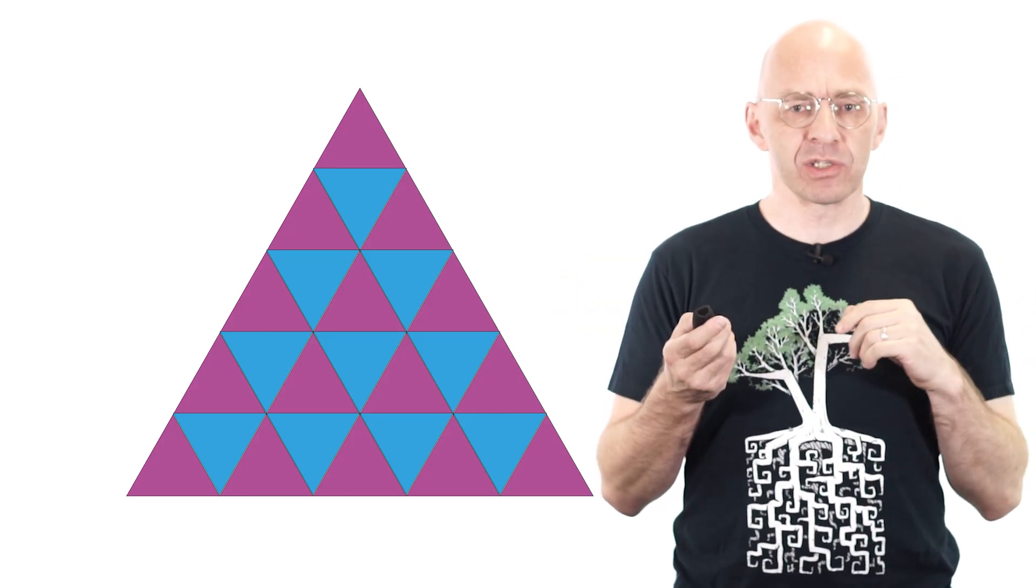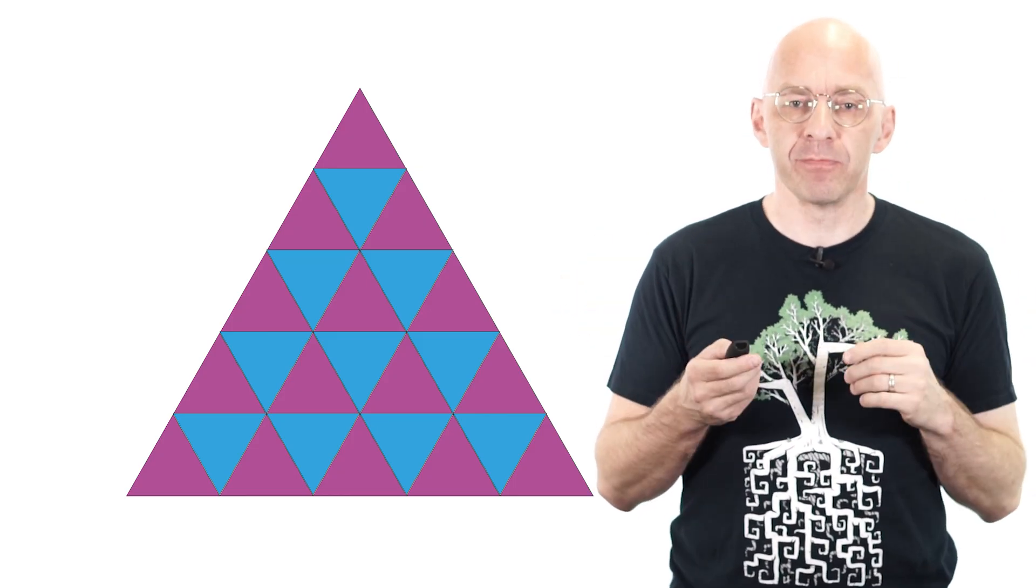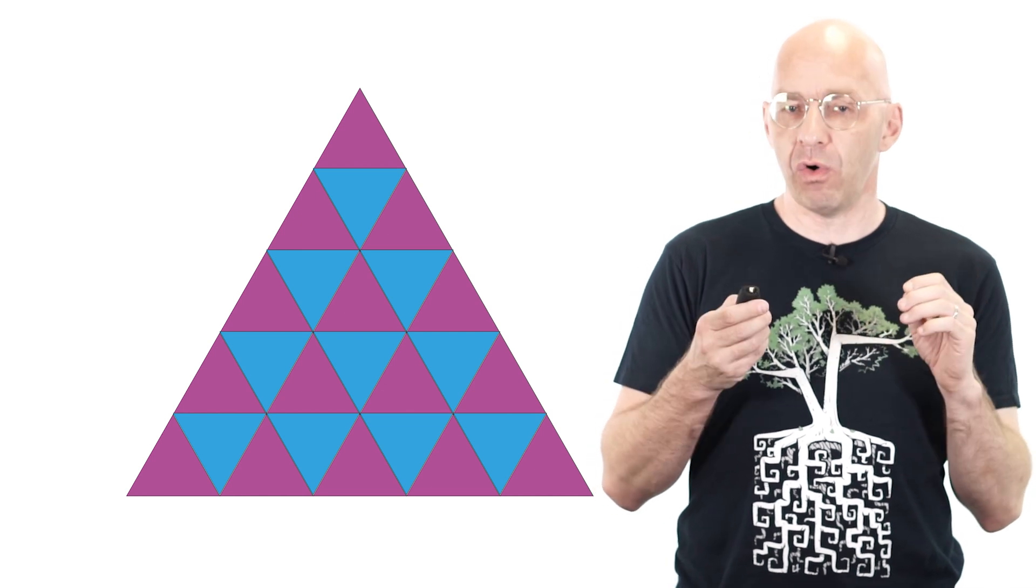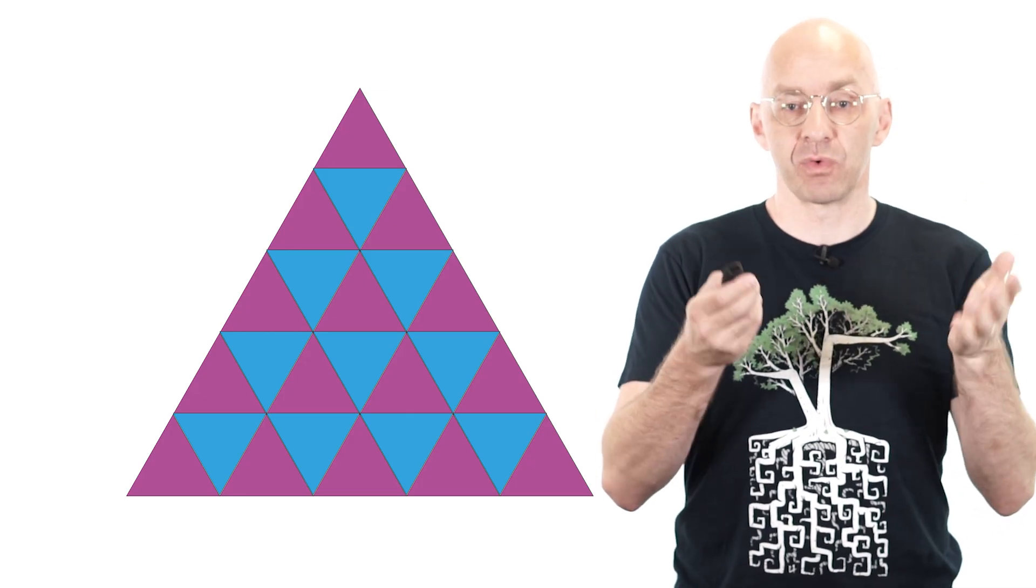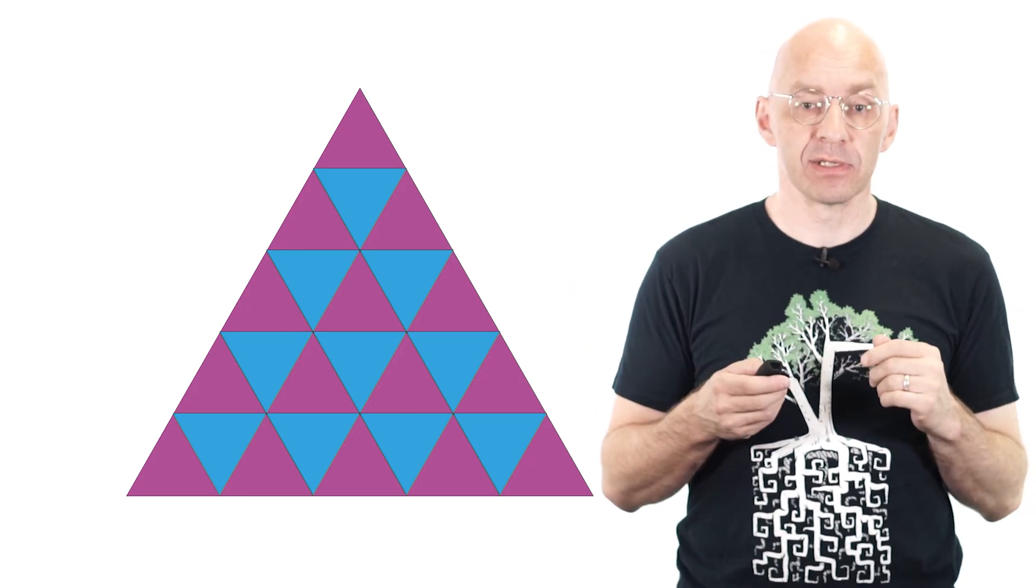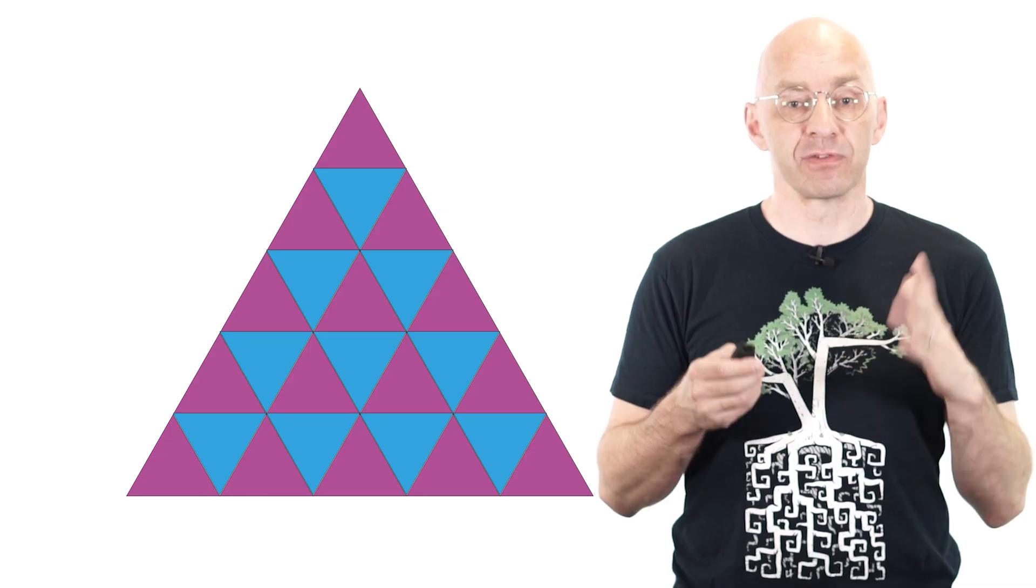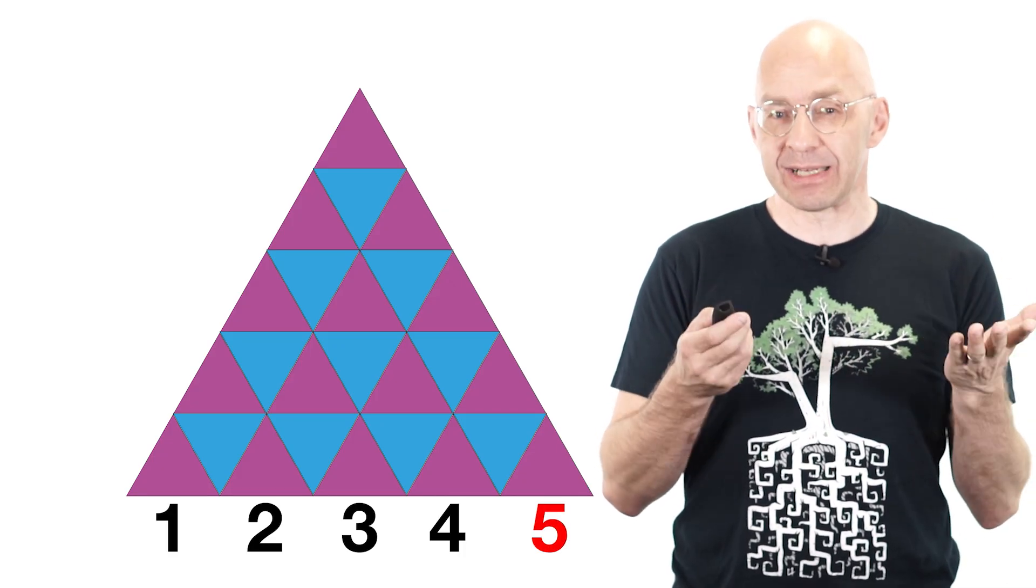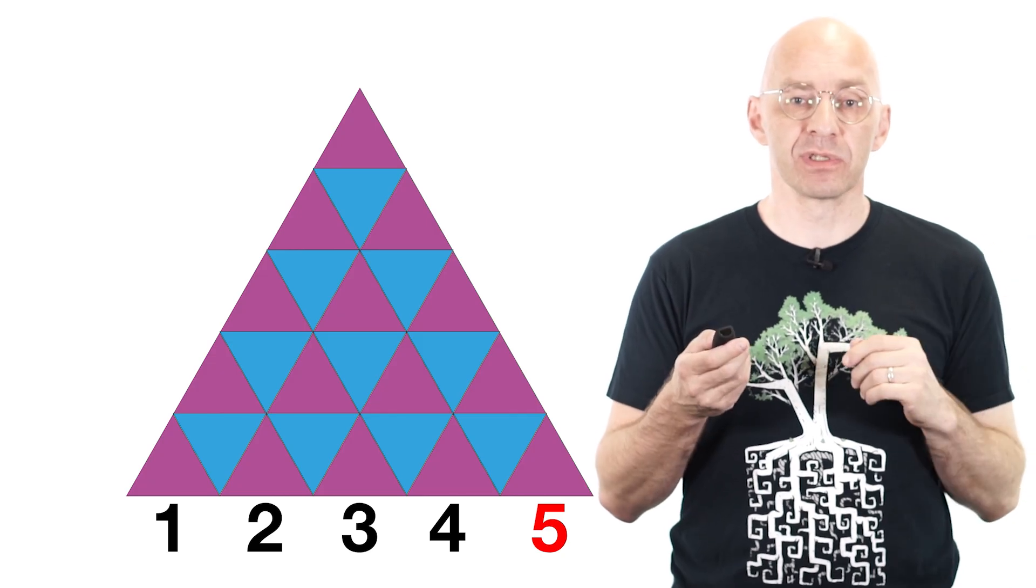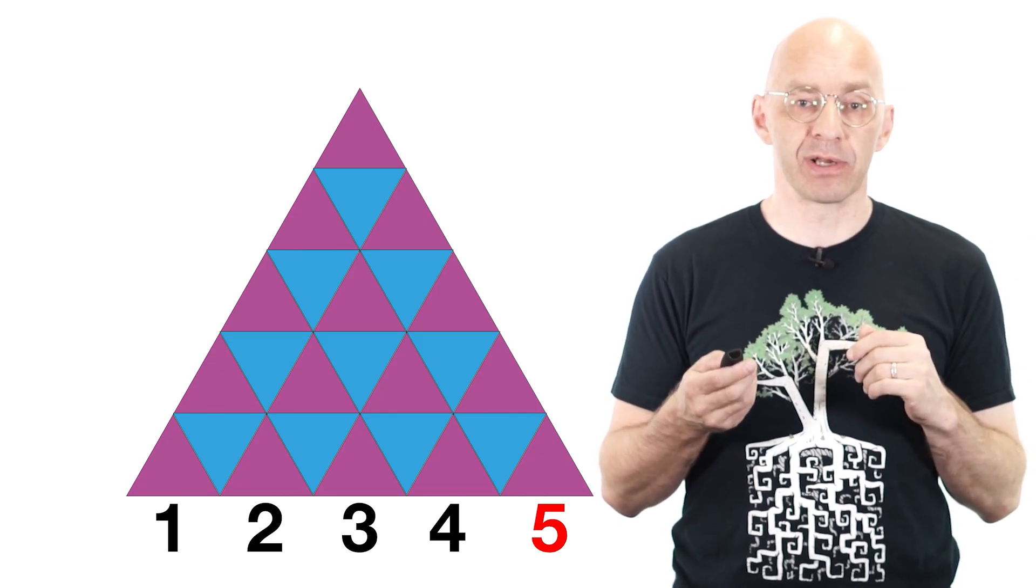Why triangular squares? Because the number of mini triangles is always a square, namely the total width in terms of mini triangles squared. In this case the width of the big triangle is 5 mini triangles and I claim that exactly 5 squared equals 25 of these mini triangles.